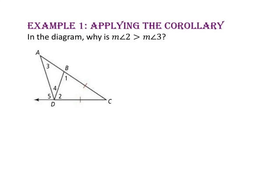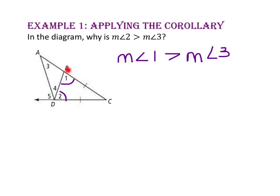In example 1, we will apply the corollary. In the diagram, why is the measure of angle 2 greater than the measure of angle 3? Since side BC is congruent to side DC, we know triangle BCD is an isosceles triangle. That means the measure of angle 2 is congruent to the measure of angle 1. Since angle 1 is an exterior angle of triangle ABD, its measure equals the sum of its remote interior angles 3 and 4, so angle 1 is greater than angle 3. Since angle 2 is congruent to angle 1, we substitute: the measure of angle 2 is greater than the measure of angle 3.